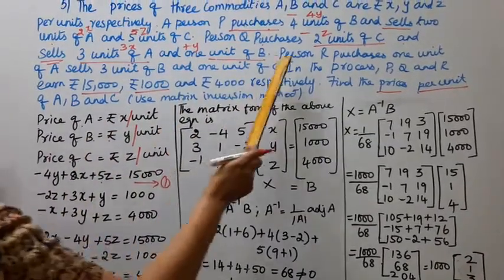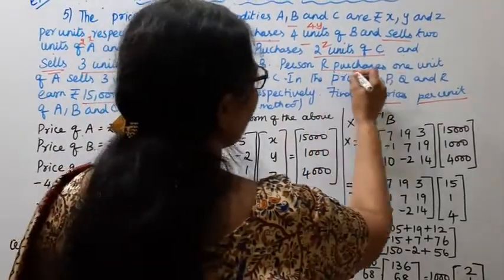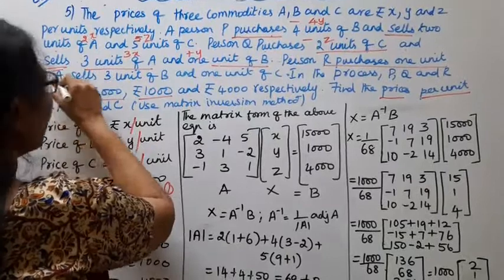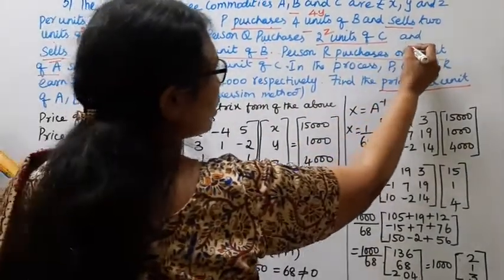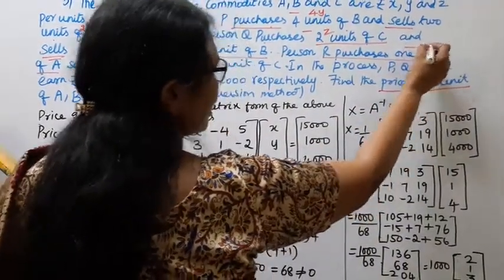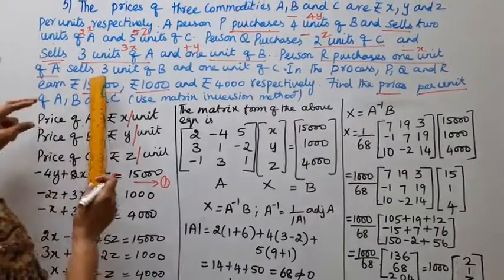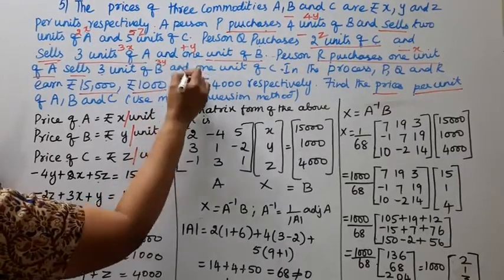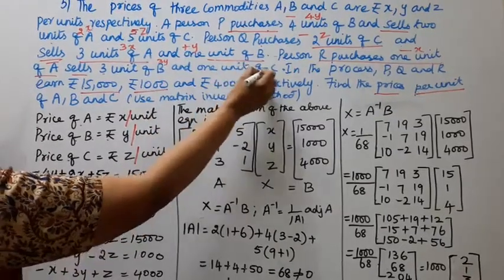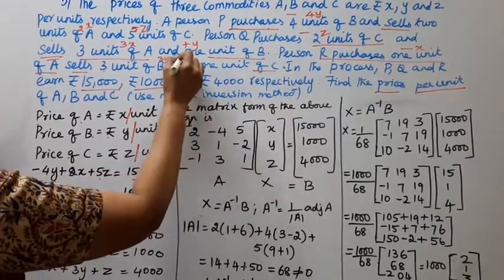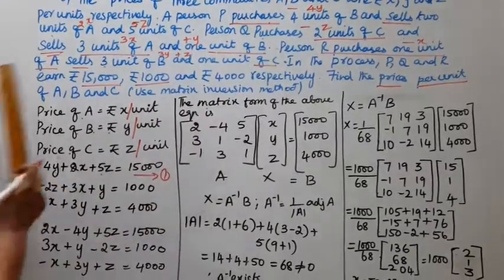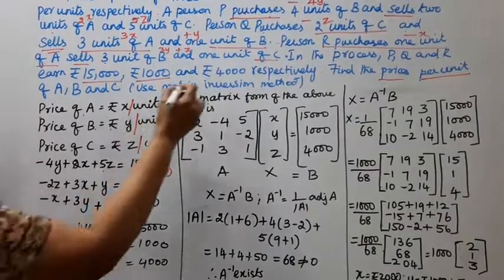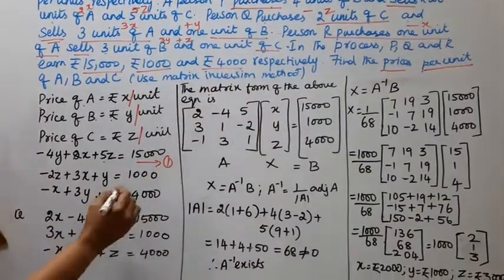Minus 2Z plus 3X plus Y equal to 1000. Person R purchases 1 unit of A. Purchases 1 unit of A, minus X purchases. Then sells 3 unit of B, 3Y and 1 unit of C plus 1Z. Minus X plus 3Y plus Z equal to rupees 4000.